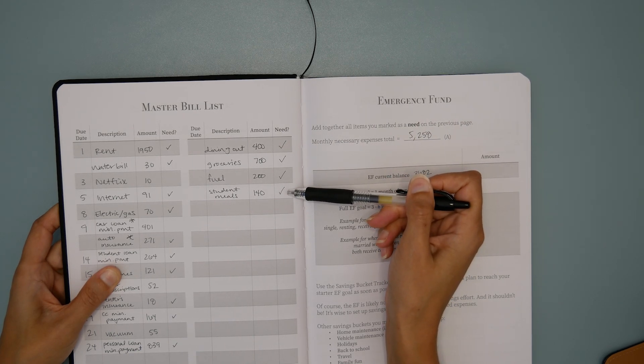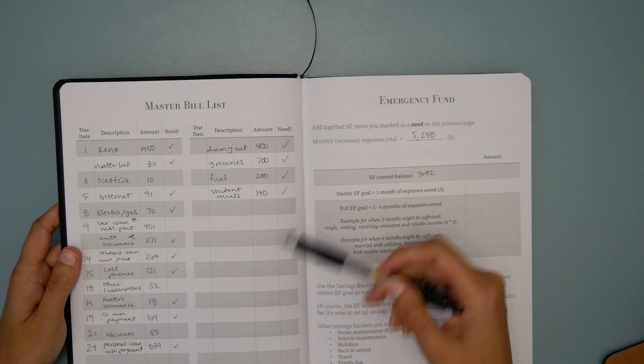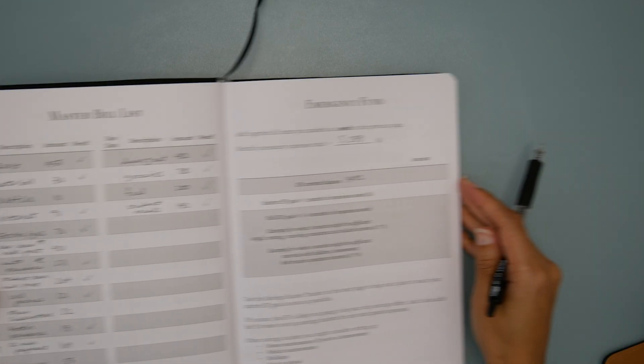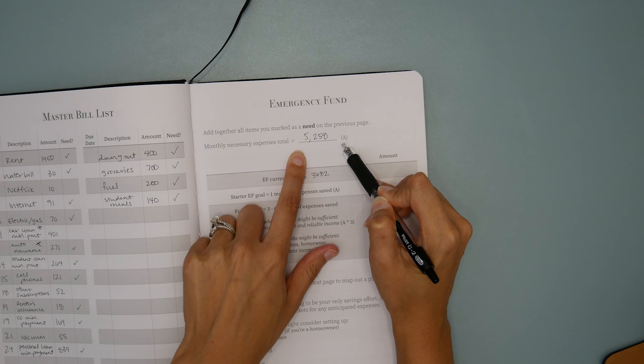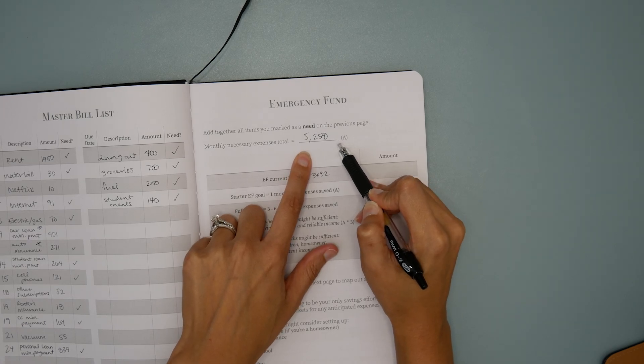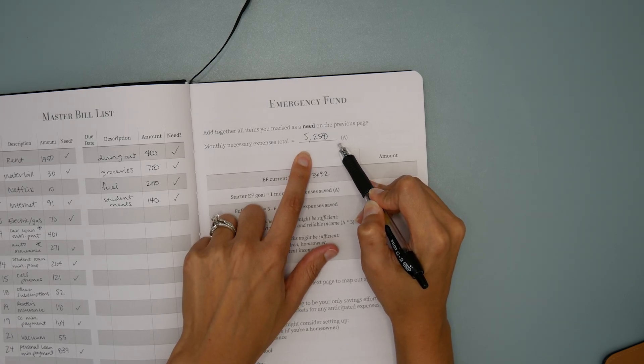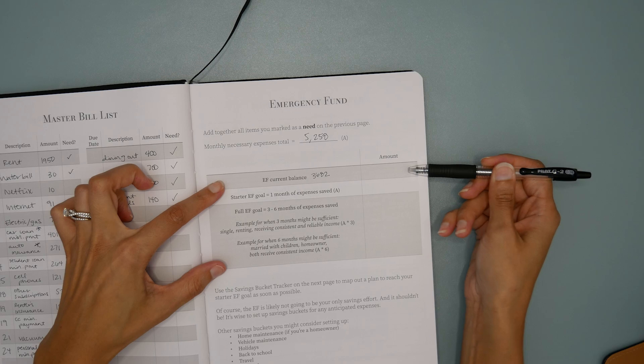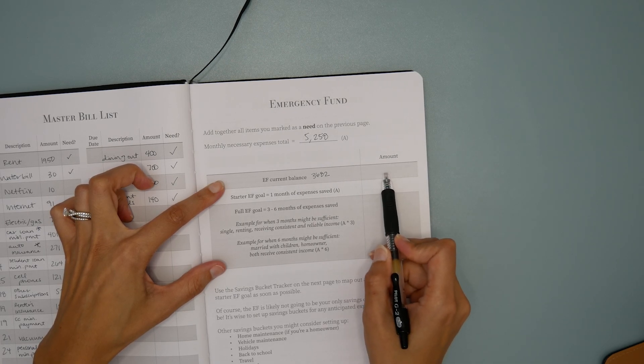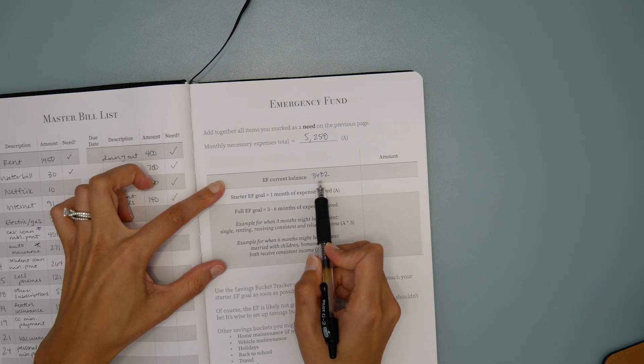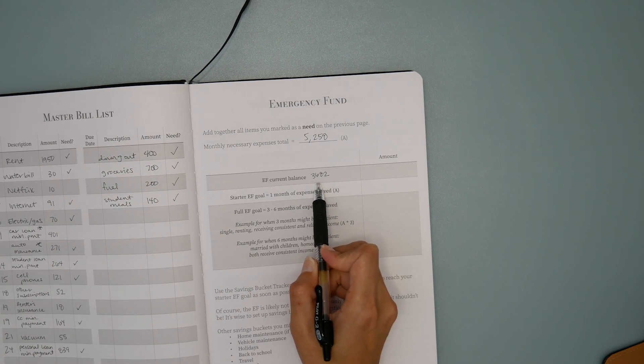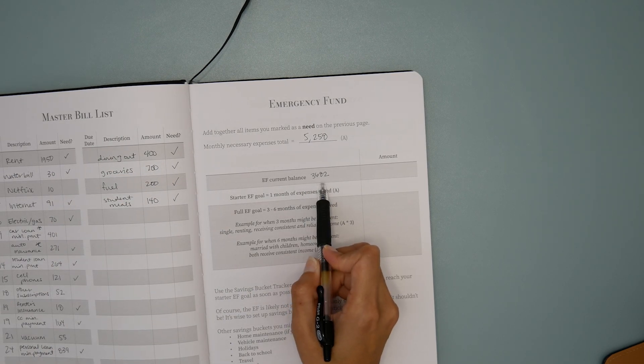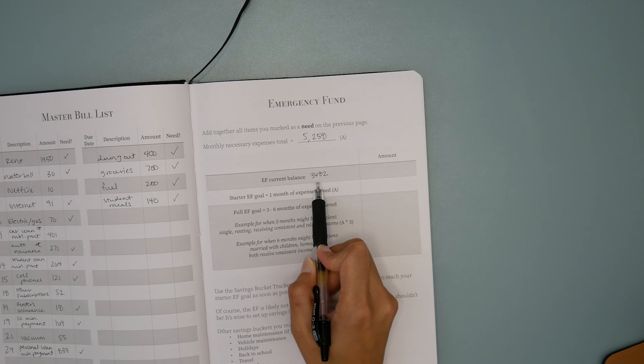She does tithe every Sunday, so on average about $40 per month in tithes. We also want to make sure we capture variable spending. So we've got food, fuel, and then meals that she covers for her child. We use this master bill list, do a little bit of math, and figure out what is one month of necessary expenses. That is this $5,258 in her case.